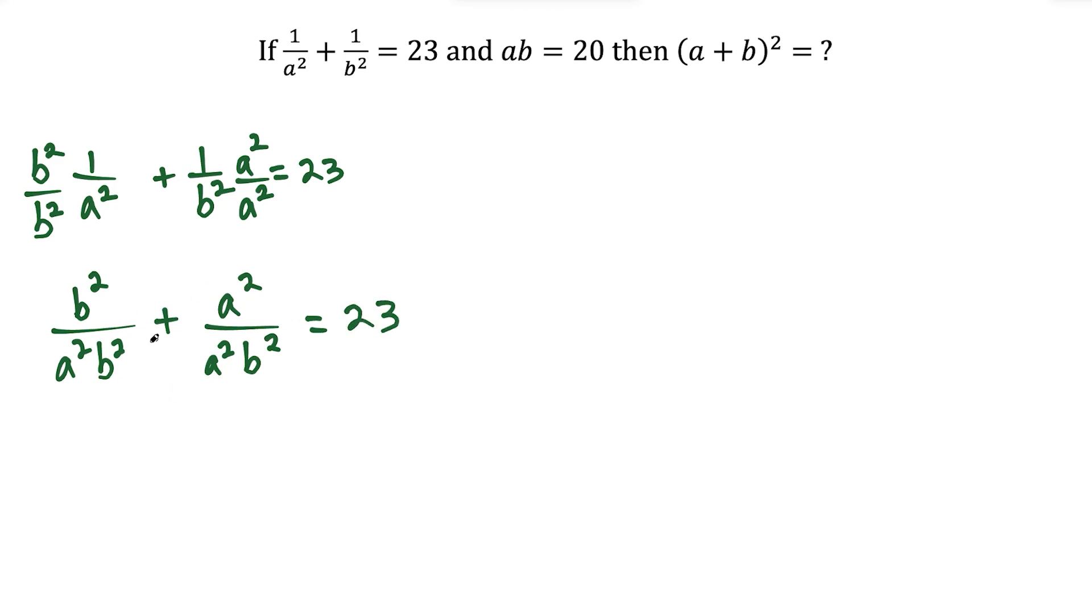So now from here, we can combine these fractions. I could say b squared plus a squared, but I could also flip the order because addition is commutative. So I could say a squared plus b squared over a squared b squared.